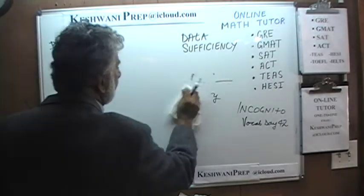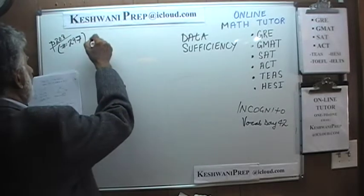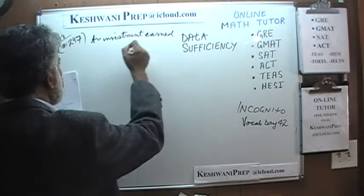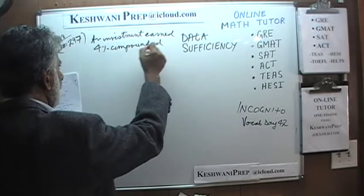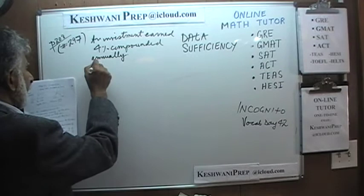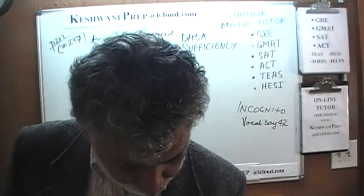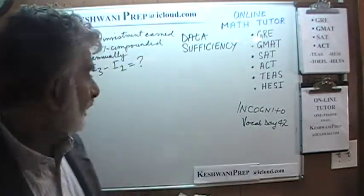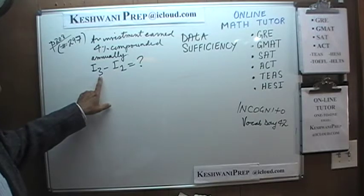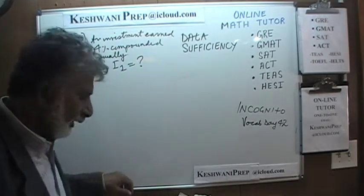Number 297. We have an investment that earns 4% compounded annually. The question is: what is the difference — or, reading verbatim from the book — the interest earned for the third year, which I'm describing as Y subscript 3, is how much greater than the interest earned in the first year? So we are simply looking for the difference between the interest earned in the third year and the interest earned in the first year.